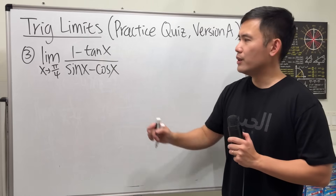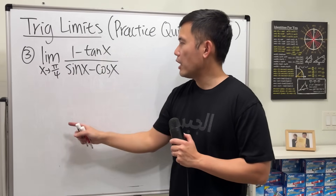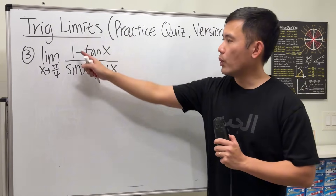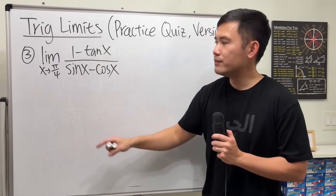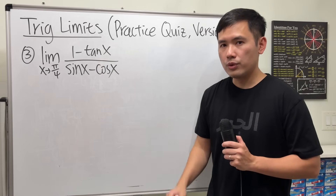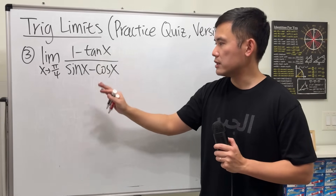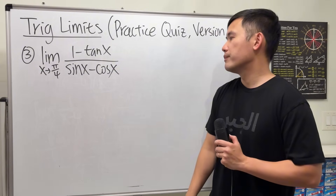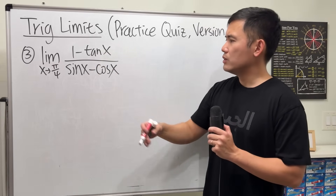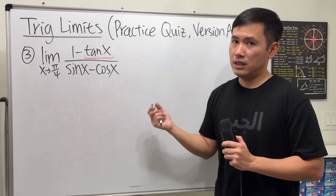Now for number three — we have tangent and cosine, but let's see. If you plug in pi over 4: tangent of pi over 4 is 1, so 1 minus 1 is zero on top. Sine and cosine of pi over 4 are both 1 over root 2, so subtracting them gives zero on the bottom too — 0 over 0. We'll rewrite tangent as sine x over cosine x.